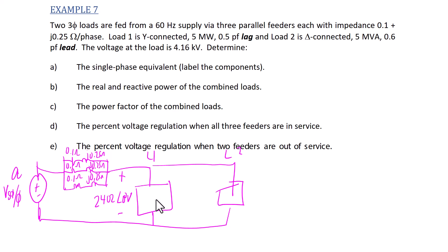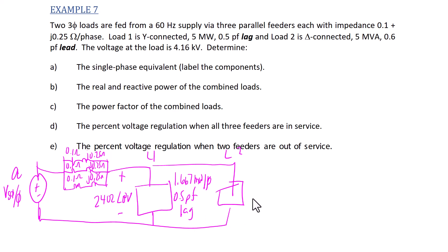For load one, this is going to be 1.667 megawatts per phase with a 0.5 power factor lag. Remember, we're dividing by three so this is the power for one phase. For load two, we have 1.667 MVA per phase with a 0.6 power factor lead.